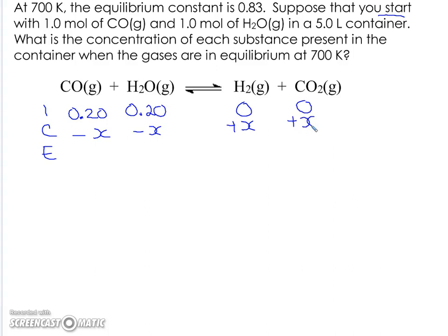So now what I can do is deal with my equilibrium concentrations in terms of X. So I'm going to subtract here, 0.2 minus X, 0.2 minus X, this becomes X, and X. Alright, so now I've got equilibrium concentrations in terms of X.